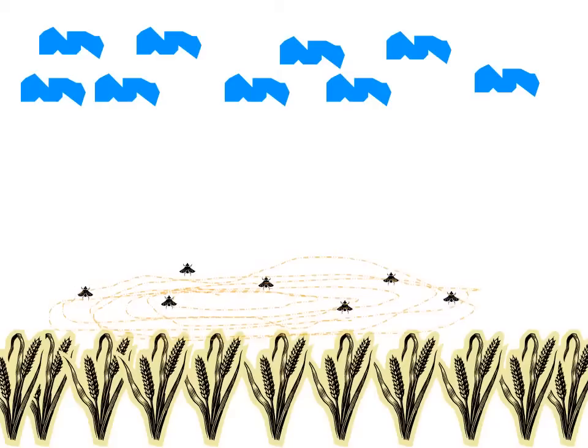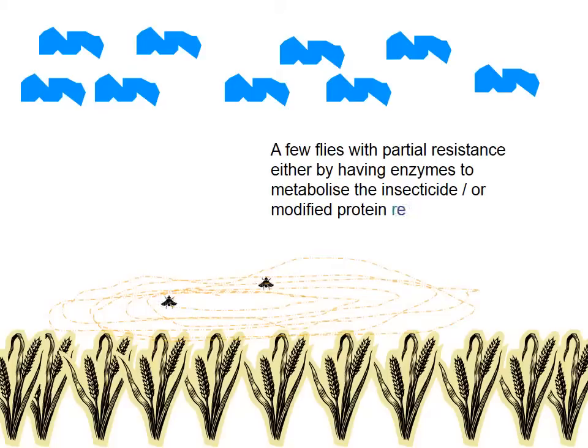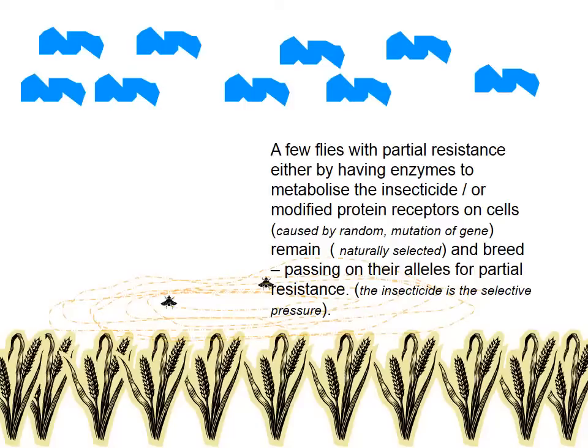Generally, insecticides will be quite successful and may kill most of the population of insects. But due to genetic variation, either by random mutation or sexual reproduction, some flies may have partial resistance to such insecticides.